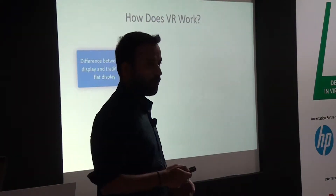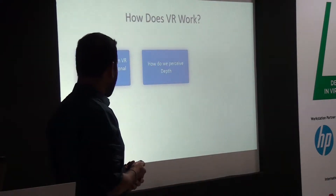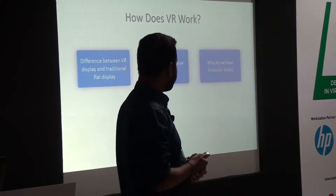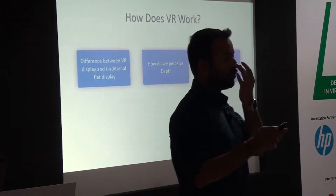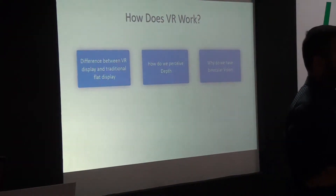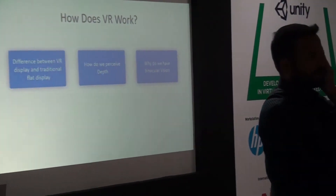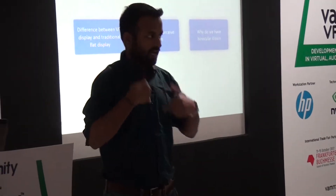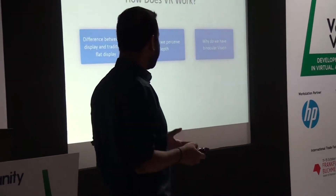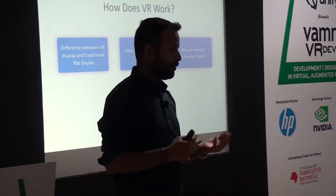We'll talk about what is the difference between traditional displays and VR, and answer this question: how do we perceive depth? Why do we have binocular vision? Does anybody know why we have two eyes and not one? To perceive depth — try holding one finger with one eye closed, and you won't know exactly how deep it is. That's why we have binocular vision, and that's what we are trying to copy or mimic in VR and computer vision.